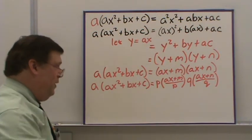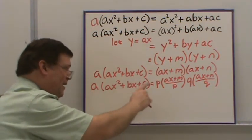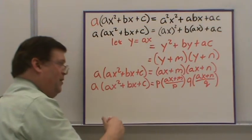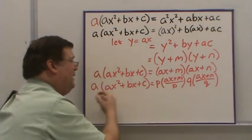And that is the proof here. As long as A is equal to P times Q here, we would divide both sides by the A.